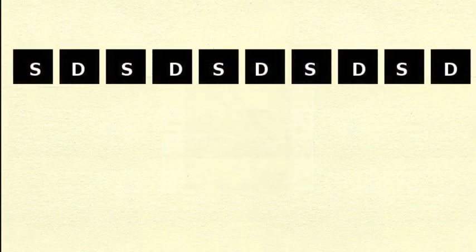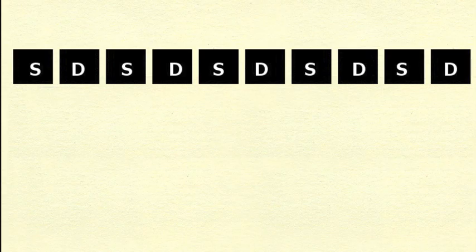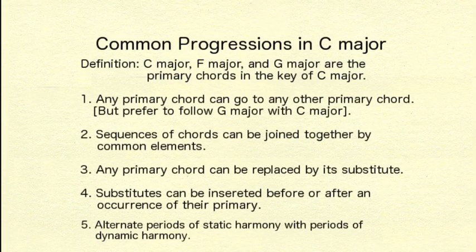Generally though, a piece of music begins with a period of static harmony, like stage setting or exposition in a story, before introducing the dynamic changes. It also usually goes out with a bang, ending with a sequence of dynamic harmony. So this gives us our last big rule for generating chord progressions. Alternate static harmony with dynamic harmony.